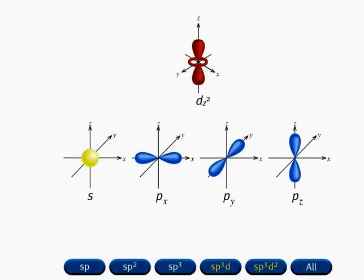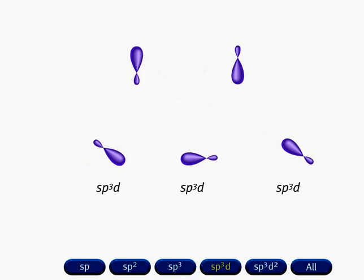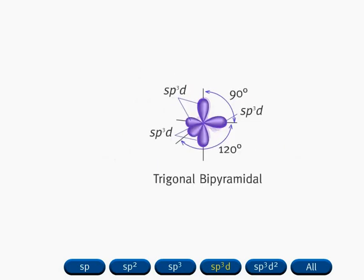Mixing an s orbital, three p orbitals, and a d orbital generates five sp³d hybrid orbitals. Note that the number of hybrid orbitals produced is equal to the number of atomic orbitals that are hybridized. The set of five sp³d hybrid orbitals has a trigonal bipyramidal arrangement. The angles between orbitals are 120 degrees in the trigonal plane, and 90 degrees between orbitals in the plane and those above and below the plane.